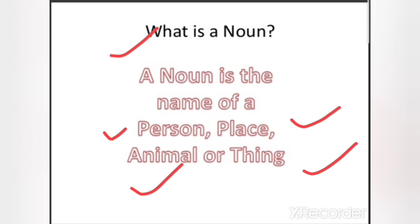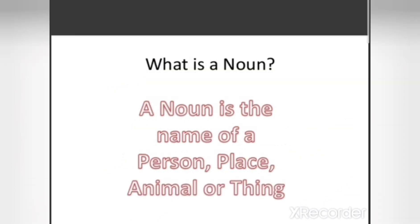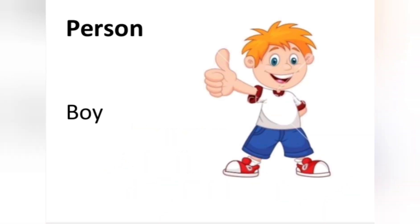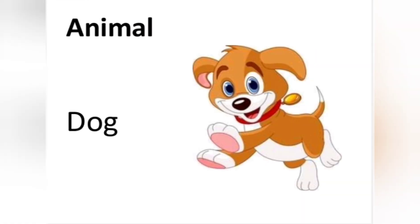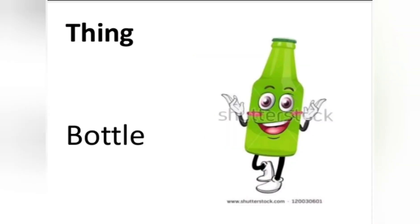For things — like table, chair, mug — these are things we refer to by their names, so they are also nouns. So the names of all these — person, place, animal, and thing — are what we call nouns. That is why the definition is: a noun is the name of a person, place, animal, or thing. Examples: person — boy; place — waterfall; animal — dog; thing — bottle.